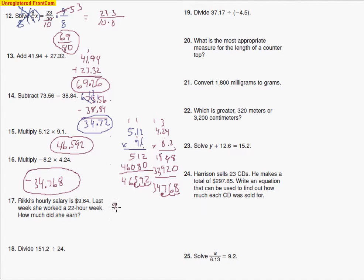So she worked 22 hours. She's getting paid $9.64 every hour. That's what this line means. Every hour. Or another way to say that is per hour. So if I multiply by the number of hours, then I end up finding out how much she made.